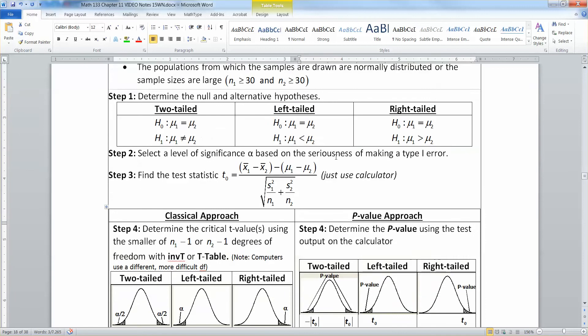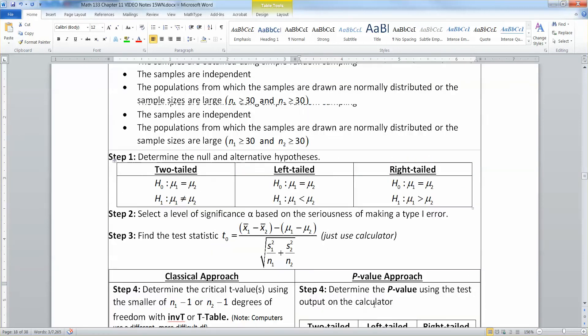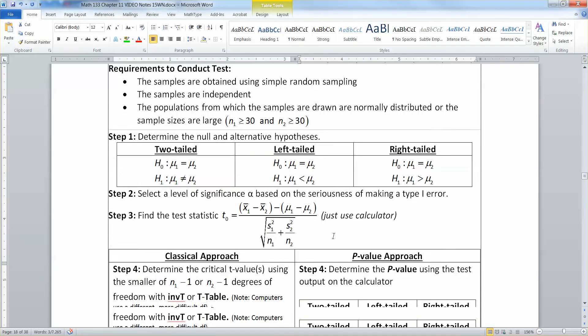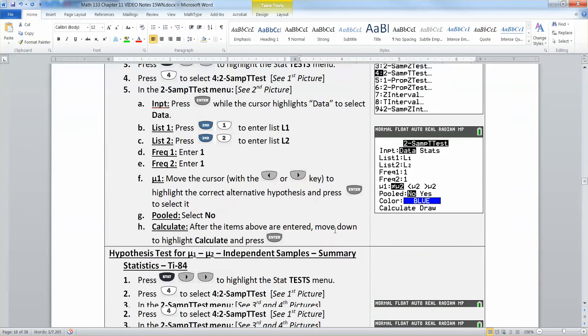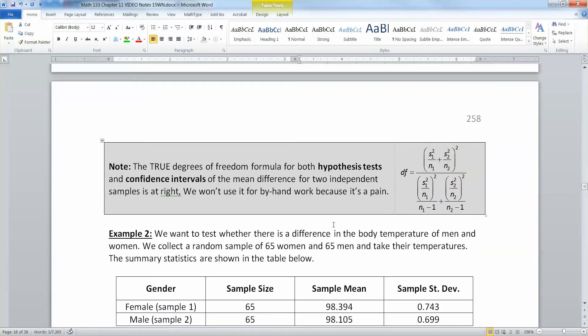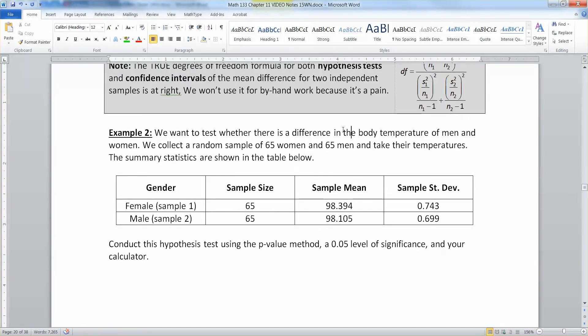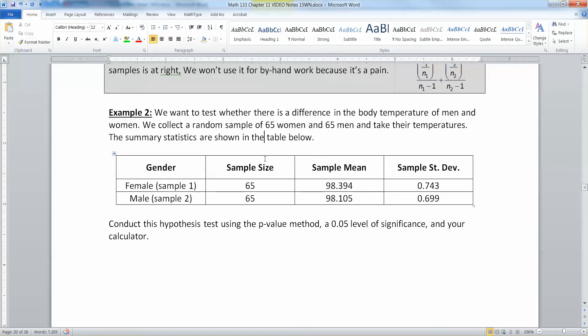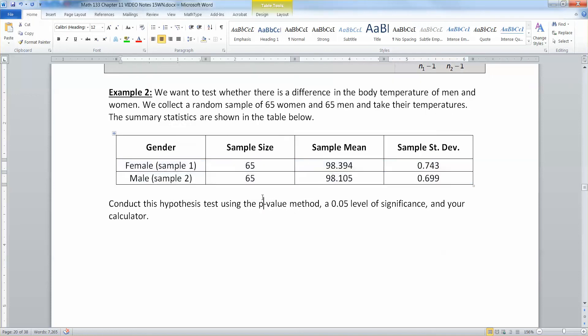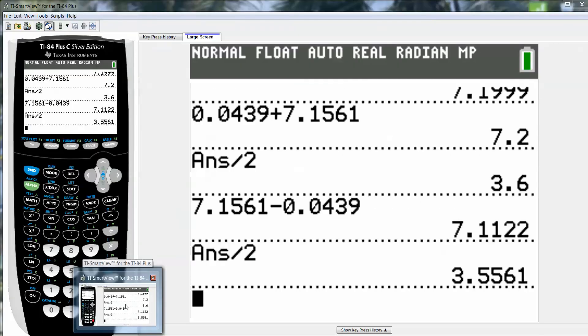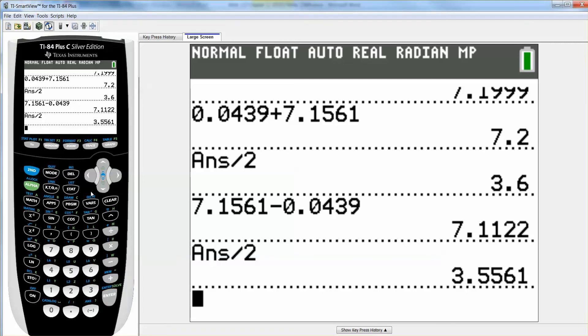And then we would compare critical values or use the p-value method, which probably is more likely because your calculator will give you the p-value output. So let's stop right there. Actually, I bet you we got time. Let's see it. There's how to do it with the calculator, which I'm going to show you in a second anyway. So I want to test whether there's a difference in the body temperature of men and women. So we collect a simple random sample of 65 women and 65 men and take their temperatures. The summary statistics are shown below.